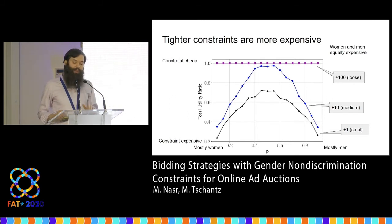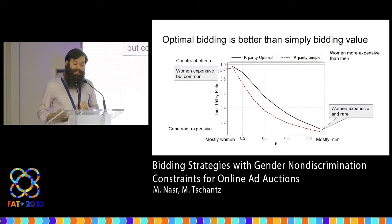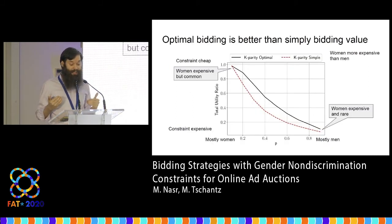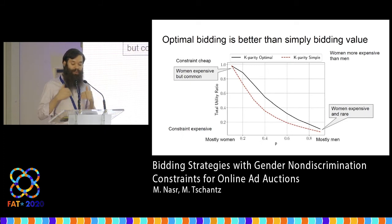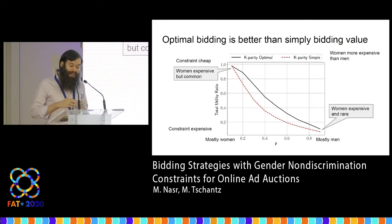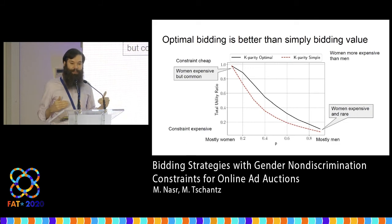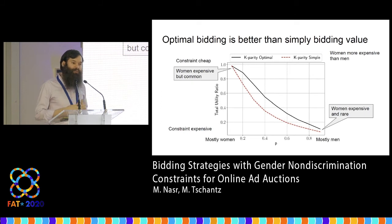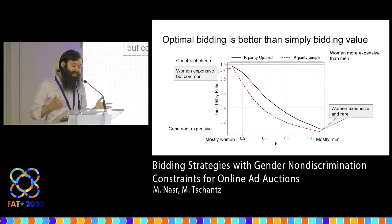Throughout this I assumed men and women are equally expensive. In this next plot, I removed that assumption and instead have women be more expensive than men. You can see that introduces an asymmetry to the graph — when women are both expensive and rare, the utility plummets. Instead of plotting different parity constraints, this time I plotted what our optimal algorithm does in the black line versus what a simple immediate-value approach does in the dotted line. Our approach outperforms the simple approach.